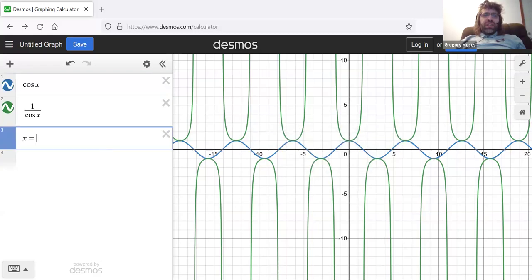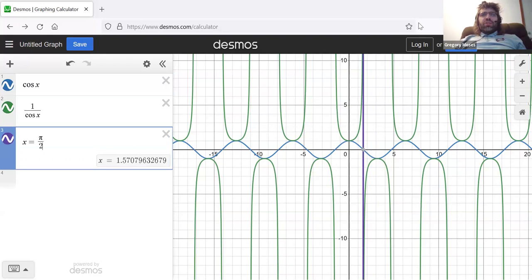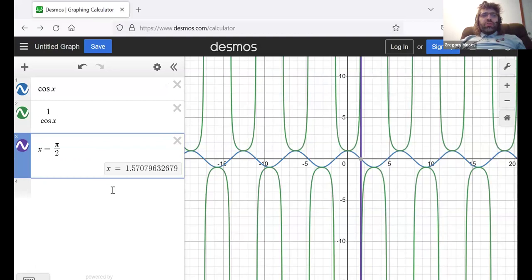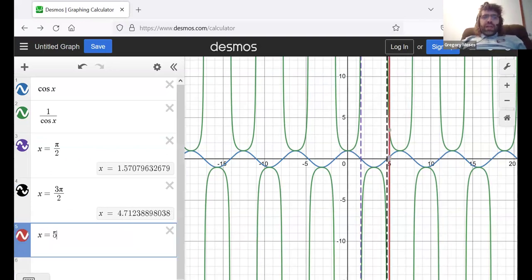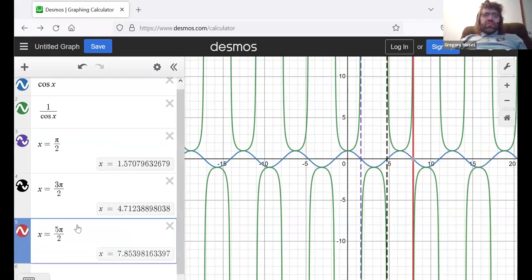So, that explains this vertical asymptote at pi over two, this vertical asymptote at three pi over two, and so on.